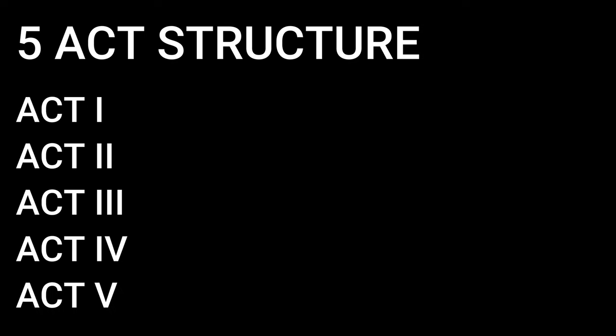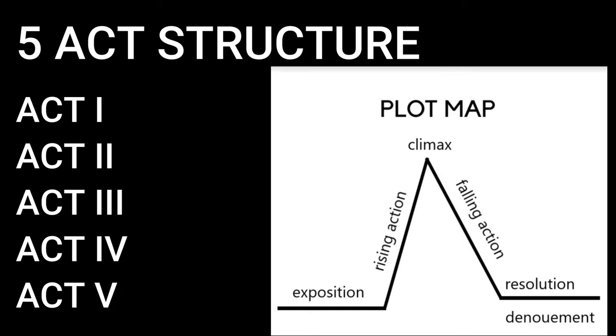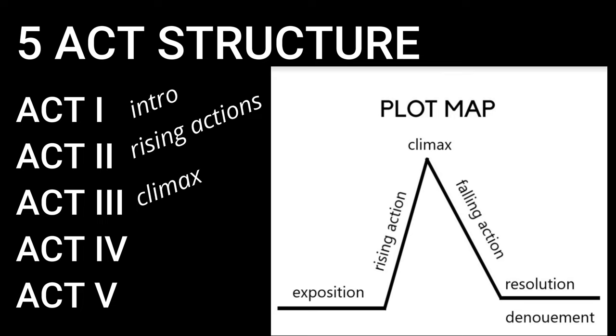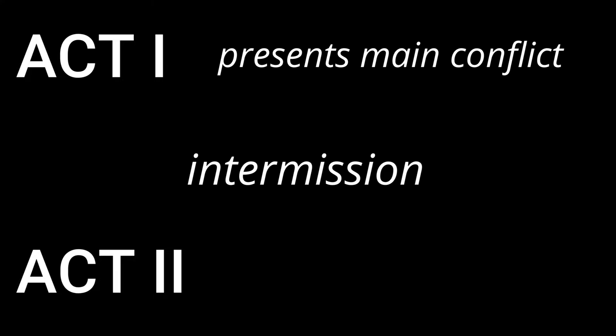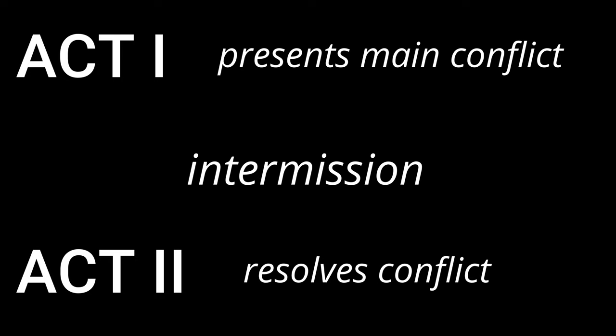Let's get back to how plays are structured. Most plays have what is known as a five-act structure. This five-act structure is exactly the same as you would see in a typical plot map, starting with an introduction or exposition, rising action, climax, falling action, and the resolution. However, more modern musicals only have two acts. These two acts are separated by an intermission, and usually the main conflict is presented at the end of act one and resolved in act two.